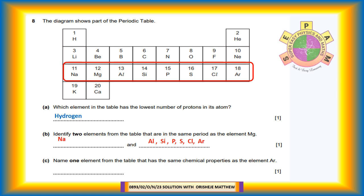Question 8c: Name one element from the table that has the same chemical properties as the element argon. Answer: Neon and helium. Note: argon and neon have eight electrons in their outermost shells and as a result, they have similar chemical properties.